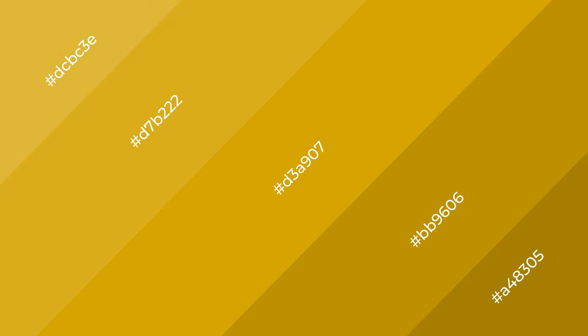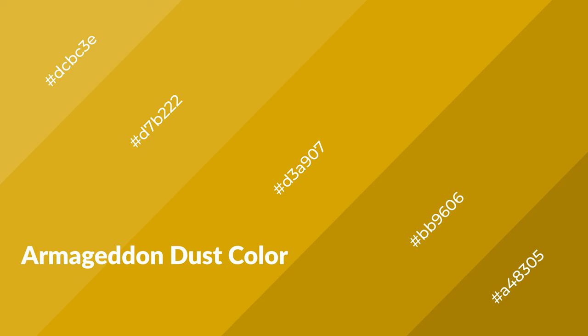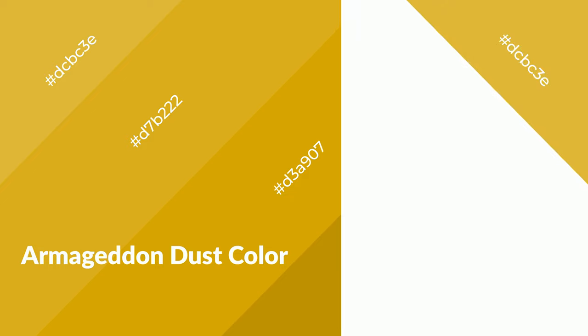To generate shades of a color, we add black to the color. Shades are used in patterns, 3D effects, and layers, and they create depth and drama. Armageddon Dust is a warm color and it emits cozier and active emotions.